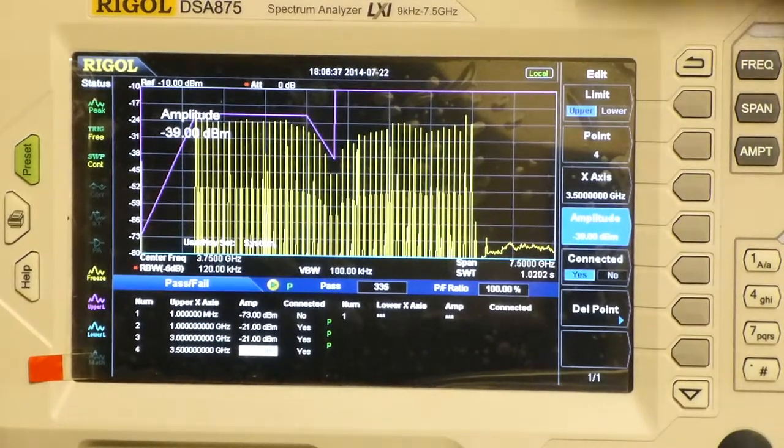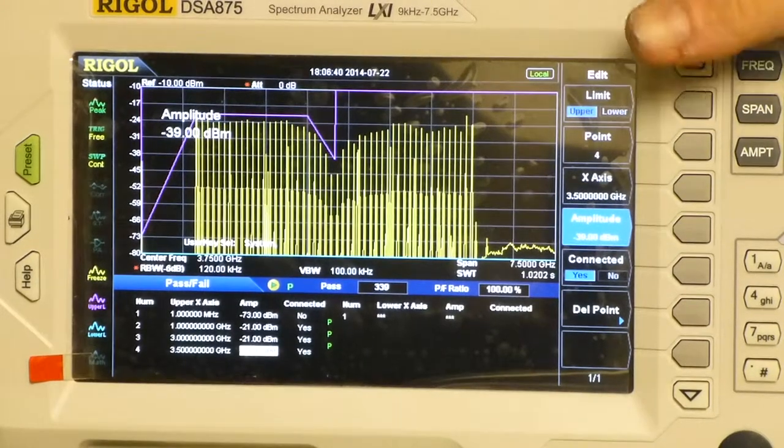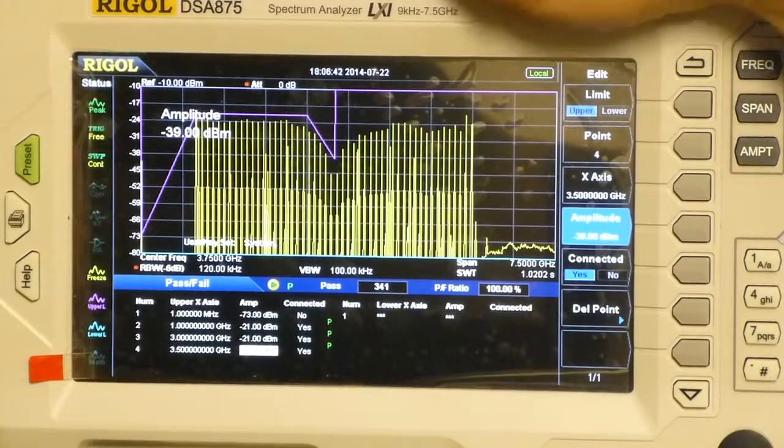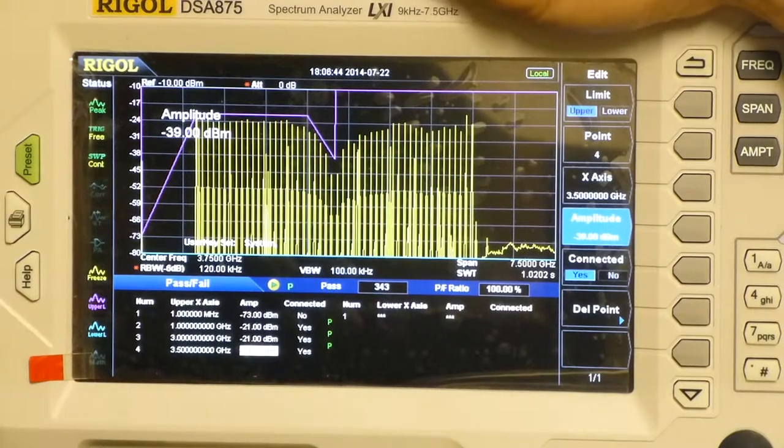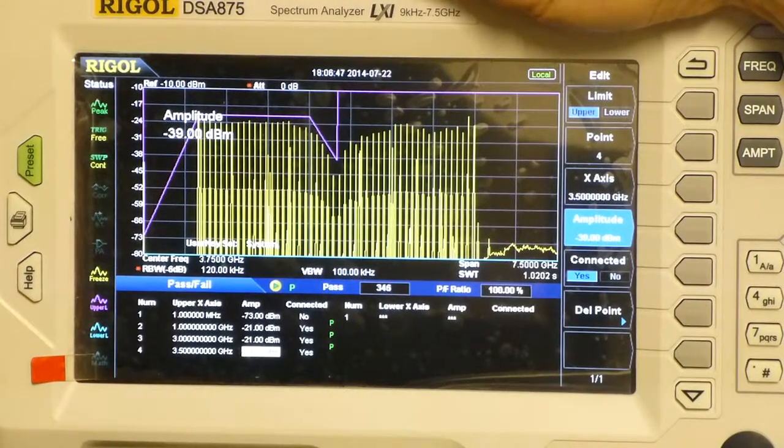So that is how to set up a display line and a pass fail limit line using the DSA 800 series spectrum analyzers to assist your EMI and pre-compliance.